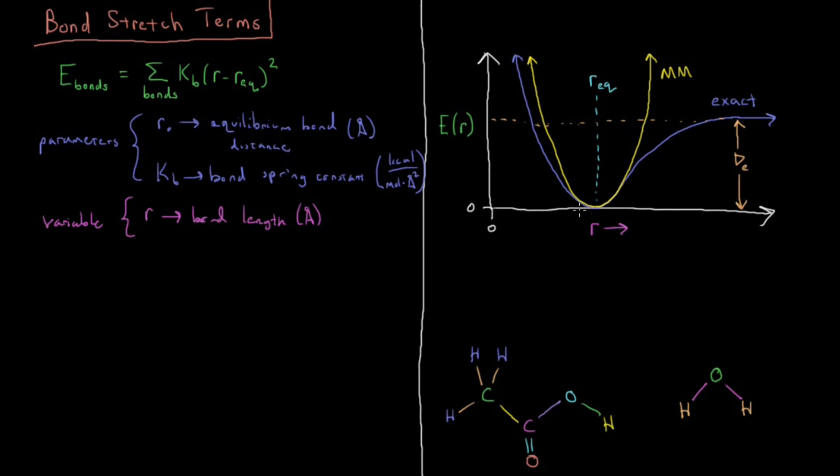And then our molecular mechanics function is an approximate function on top of that, which we have in yellow here. So how do we arrive at this particular potential? Well, much in the same way that we did for a harmonic oscillator.